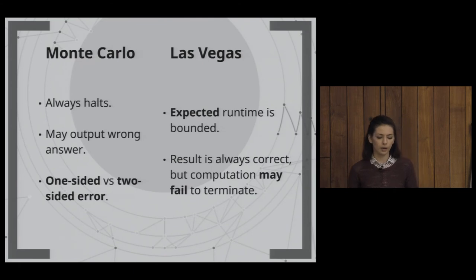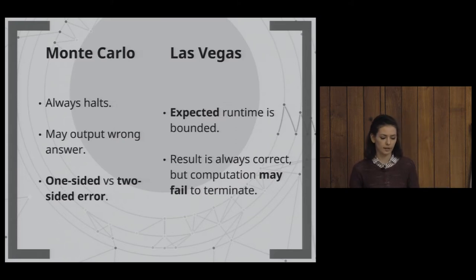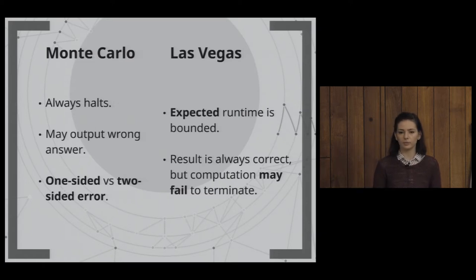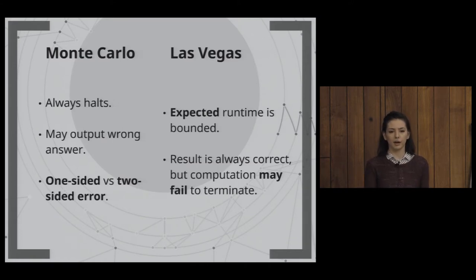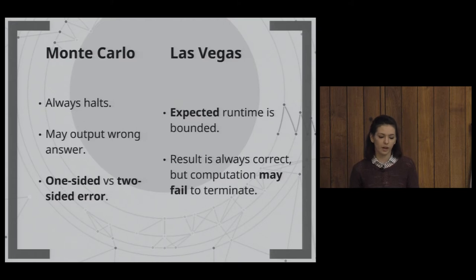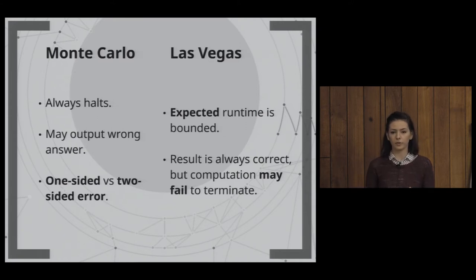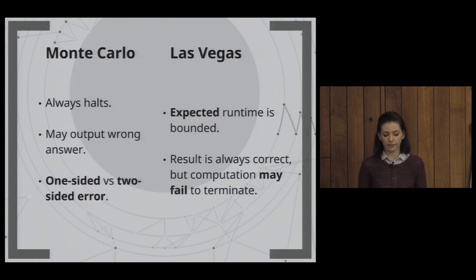Two important and frequently used types of algorithms are Monte Carlo and Las Vegas. Monte Carlo algorithms always halt but may output the wrong answer. If we have a problem determining membership to a set, the algorithm outputs yes or no, but the answer could be wrong with some probability — some error. What we care about is how large this error is, and whether it is one-sided or two-sided.